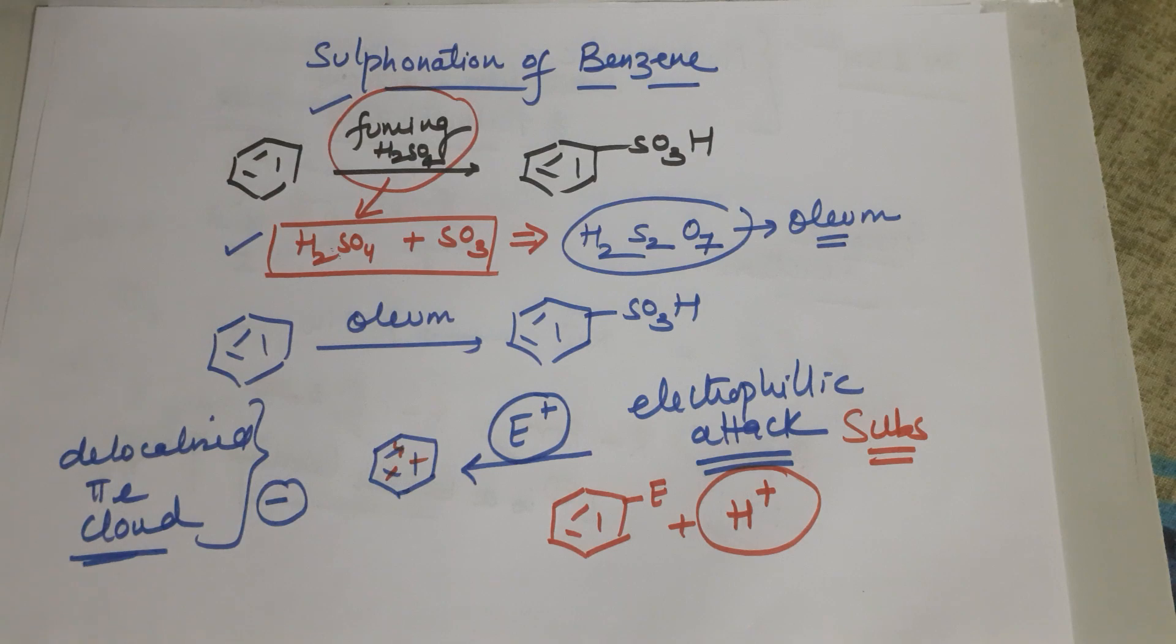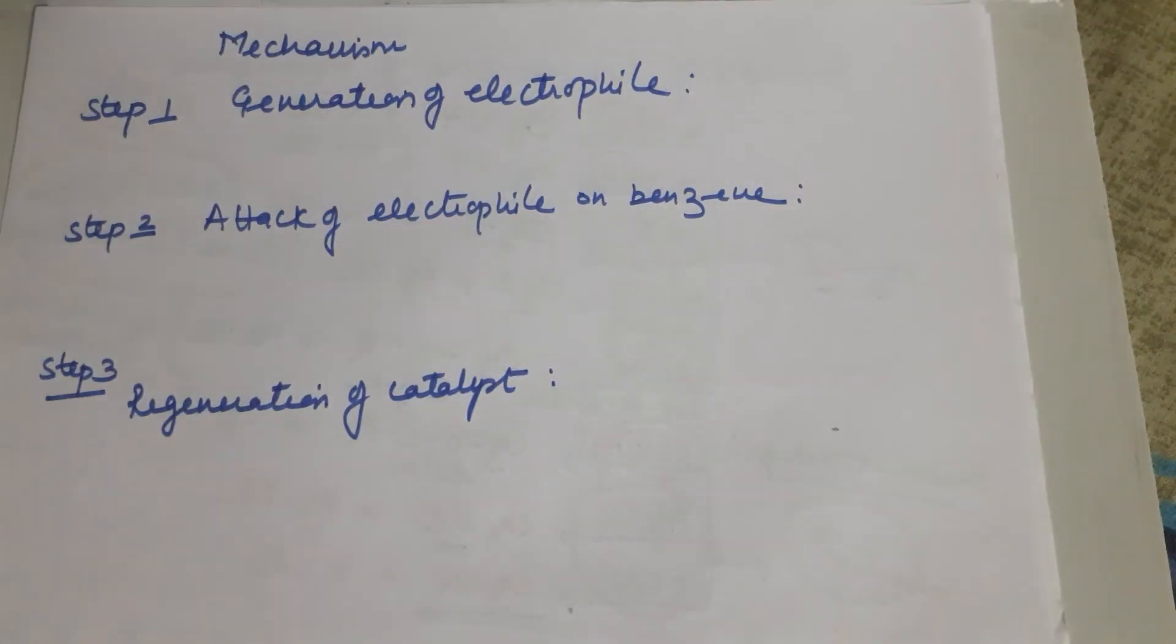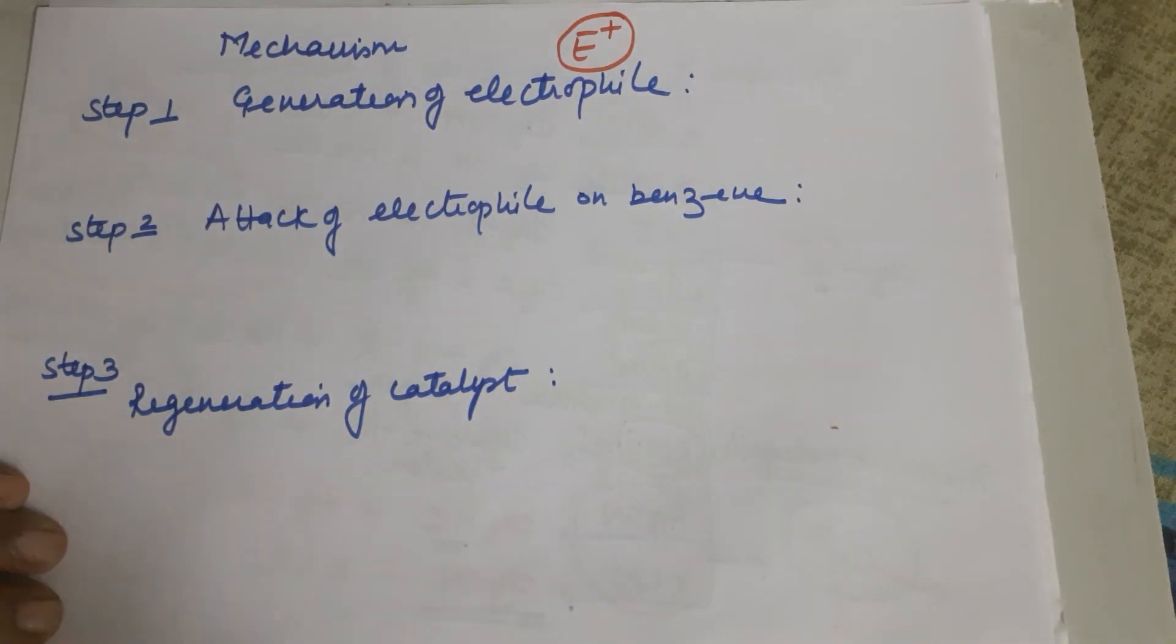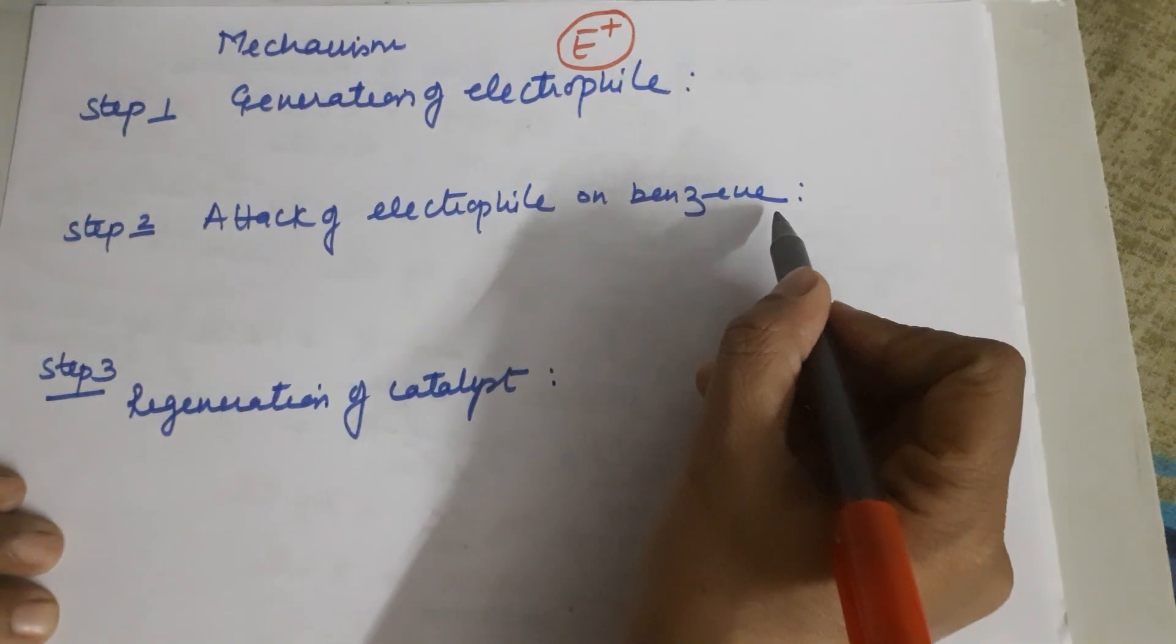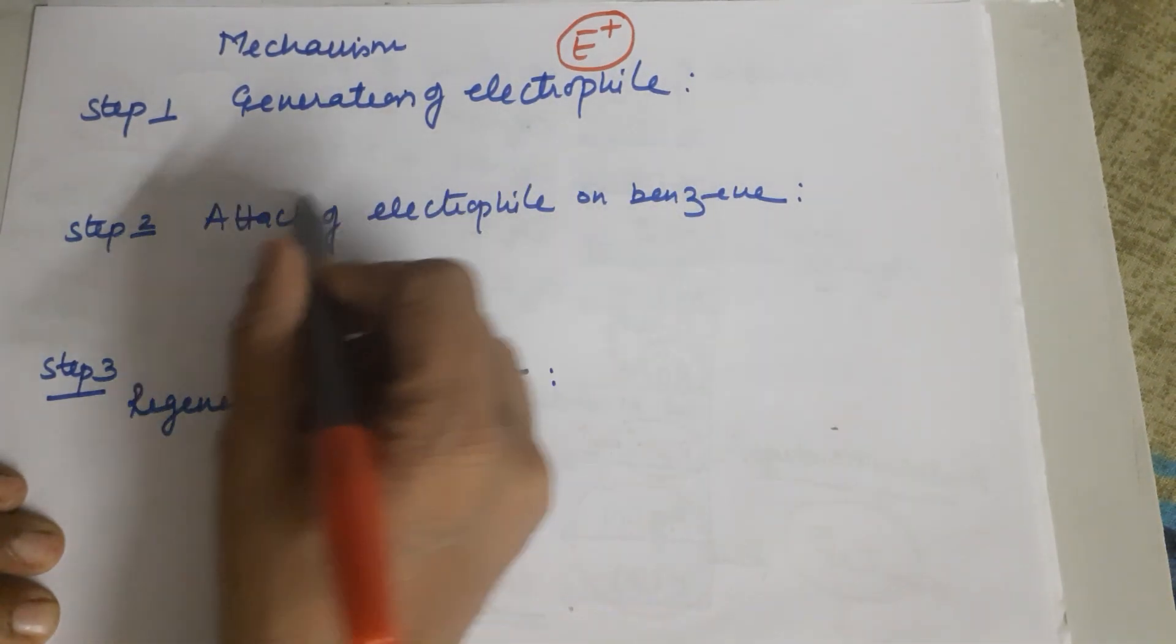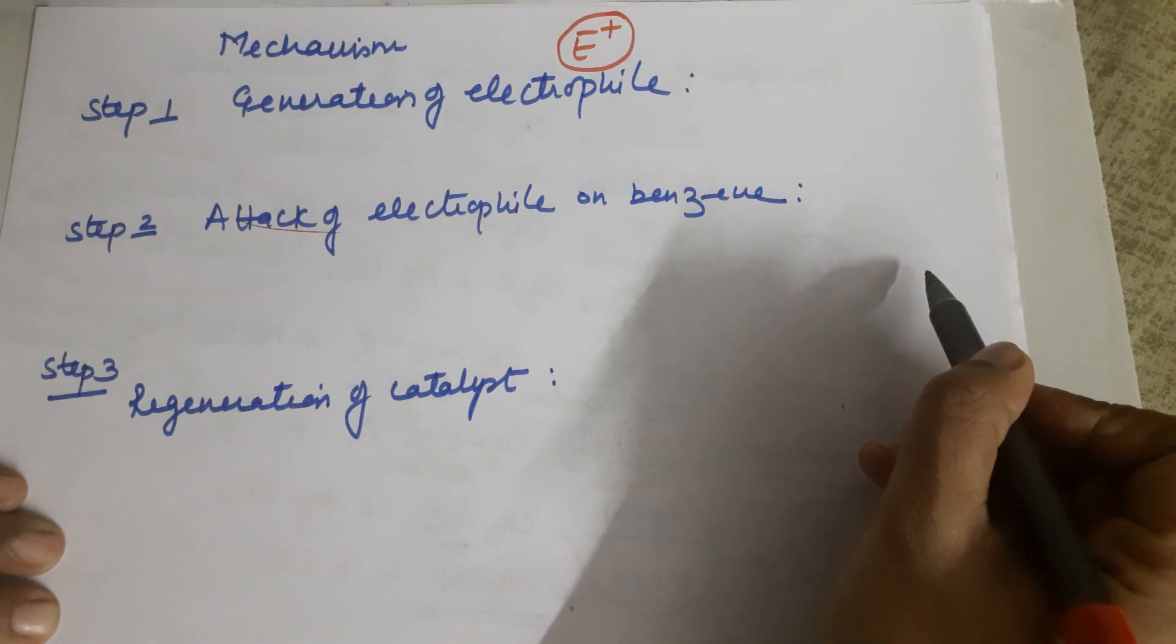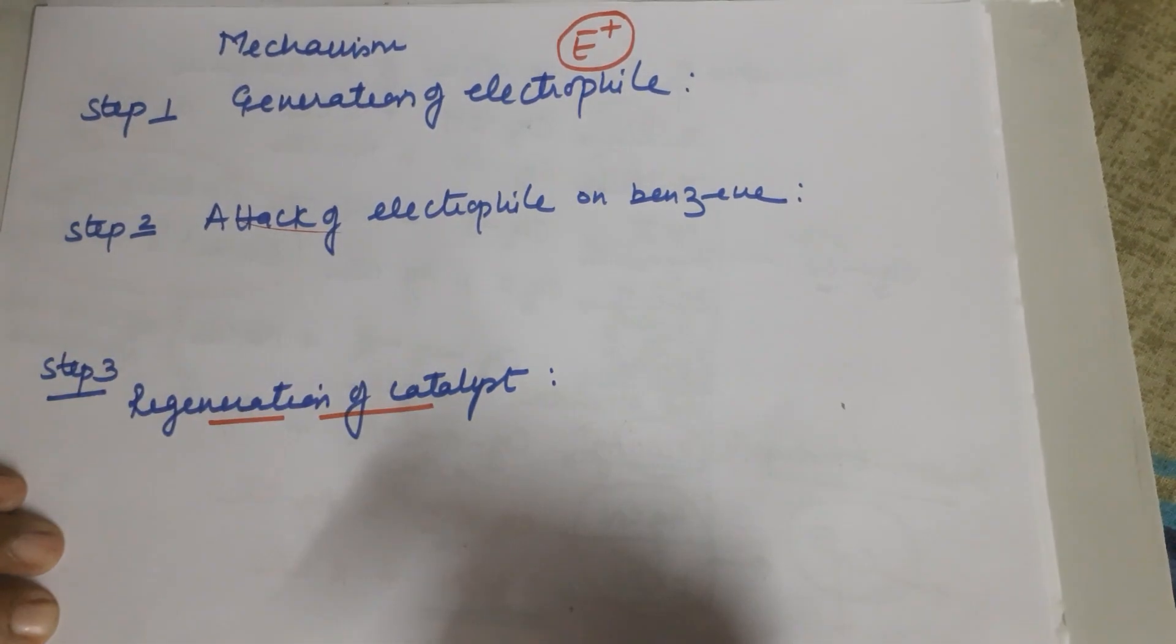During this sulfonation reaction, when we talk about the mechanisms, there are three steps. Step number one is always generation of an electrophile because attack has to be by an electrophile. Second step is this attacks onto the benzene ring. During this particular reaction it will lead to a loss of H+. And finally the catalyst in the reaction gets regenerated.